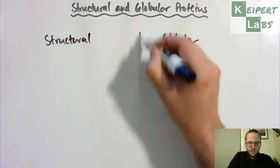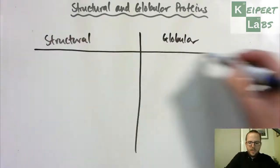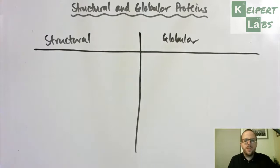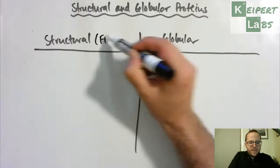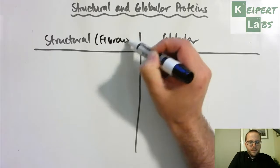So we talk about structural and globular proteins. We're going to set up this sort of a table that we can use to compare them. So structural are also known as fibrous proteins.